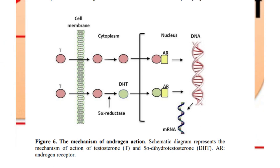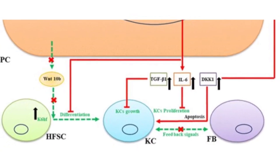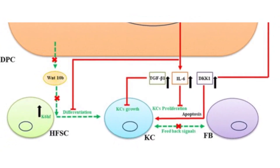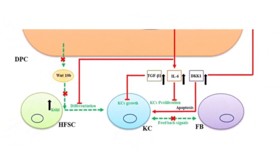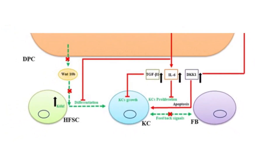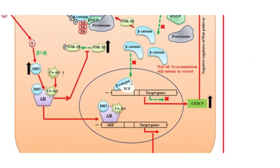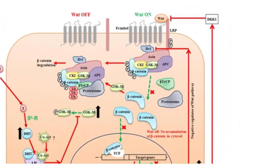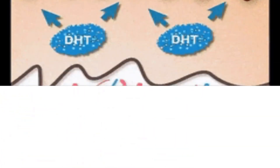Inside the cell nucleus, the DHT-receptor complex interacts with DNA and influences the transcription of specific genes. In the context of androgenetic alopecia, this leads to changes in the proteins produced by the hair follicles.